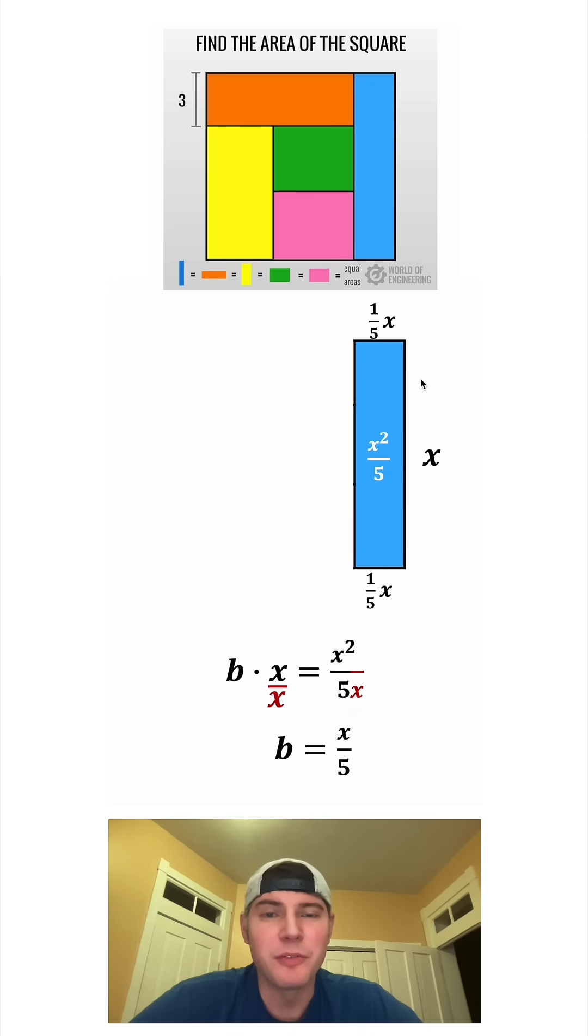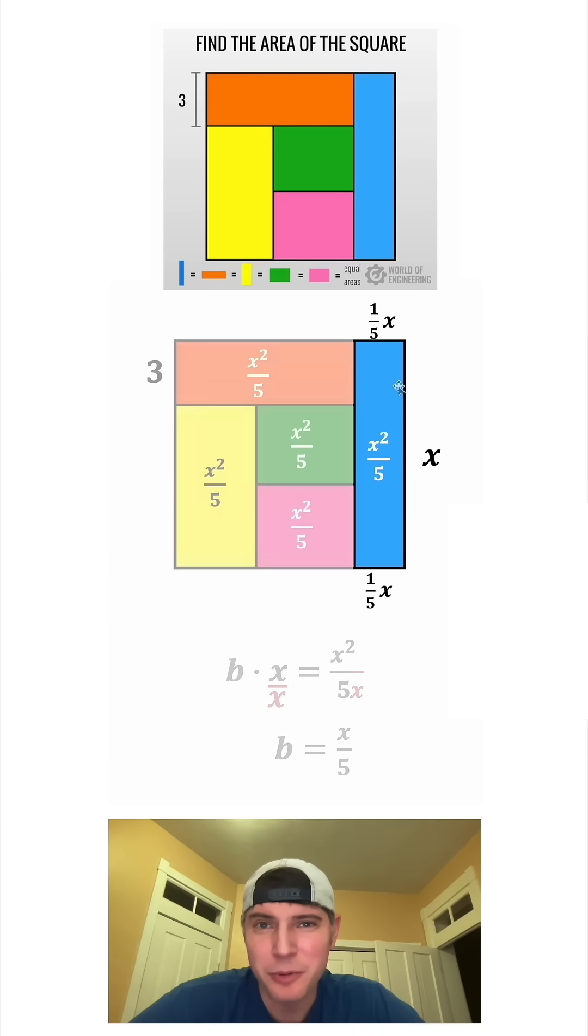So let's change this b to one-fifth x. And the same thing for the top, it will also be one-fifth x. And now let's bring back the rest of our square. Each side of this square is equal to x. So if this blue portion is one-fifth x, that means that the orange portion is going to be four-fifths x. And now we have all the parts of this orange rectangle, so let's focus on that.